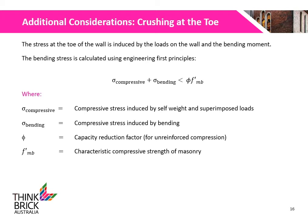This is calculated using engineering first principles, where sigma compressive is the compressive stress induced by self-weight and superimposed loads; sigma bending is the compressive stress induced by bending; phi is the capacity reduction factor; and finally F-MB is the characteristic compressive strength of the masonry.